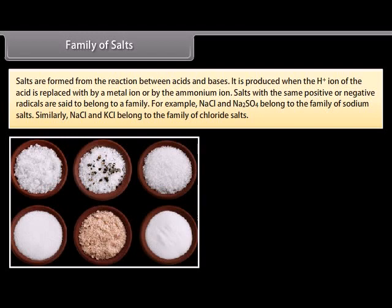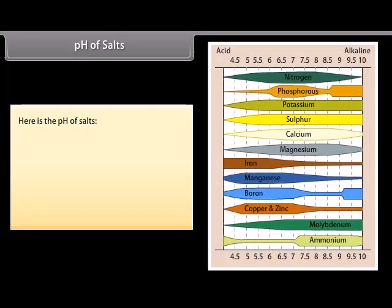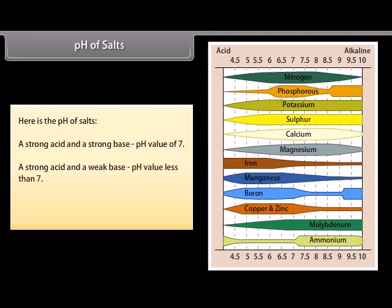For example, NaCl and Na2SO4 belong to the family of sodium salts. Similarly, NaCl and KCl belong to the family of chloride salts. pH of salts: Here is the pH of salts. A strong acid and a strong base, pH value of 7. A strong acid and a weak base, pH value less than 7. A strong base and a weak acid, pH value more than 7.